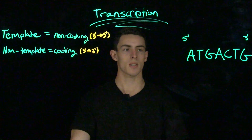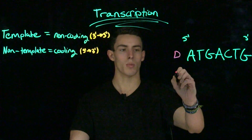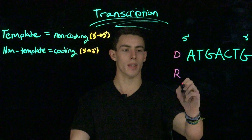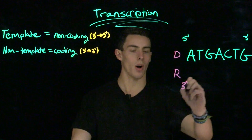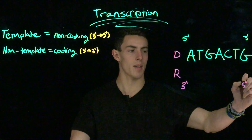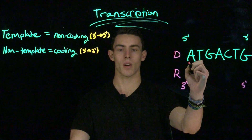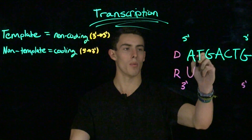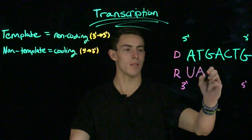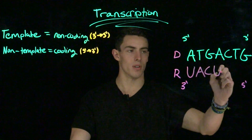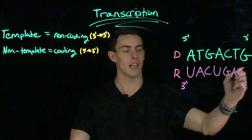Now that we've determined the directionality, let's replace the nucleotides from the DNA with complementary RNA on the bottom. Remember that our RNA, because it's complementary, is also anti-parallel — so on the left side we have 3' and on the right side we have 5'. A pairs with uracil, T pairs with adenine, G pairs with cytosine, A pairs with uracil, C pairs with guanine, T pairs with adenine, and G pairs with cytosine.